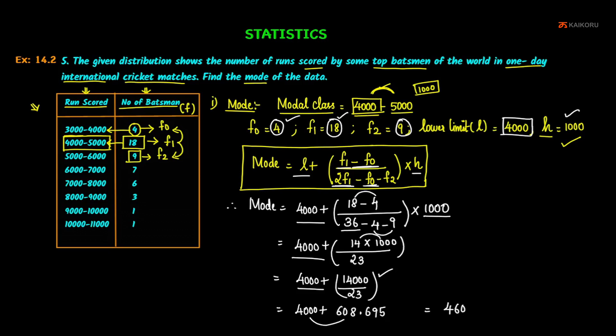Add and we get 4608.695. Therefore, the modal run is equal to - the mode of the given data is equal to 4608 point 7 runs. Round off because 95 is there, so it becomes 7. Therefore, the mode of the given data is 4608.7 runs. This is the answer.